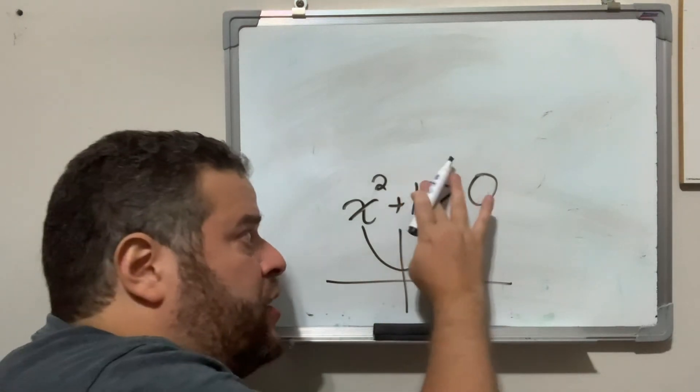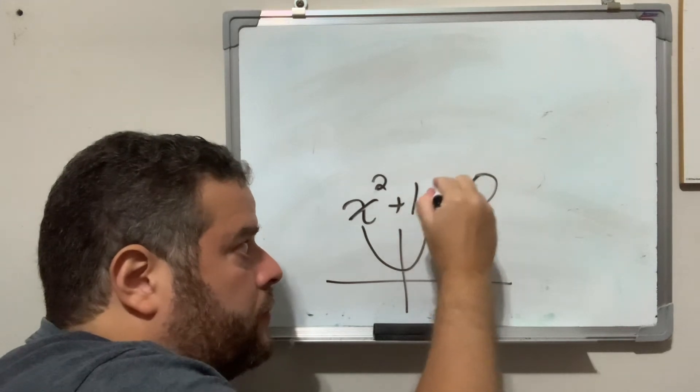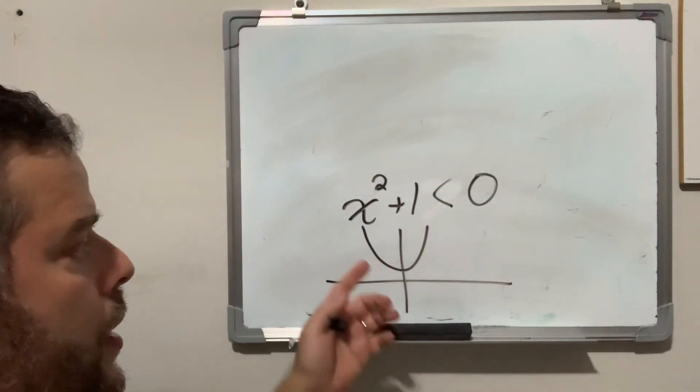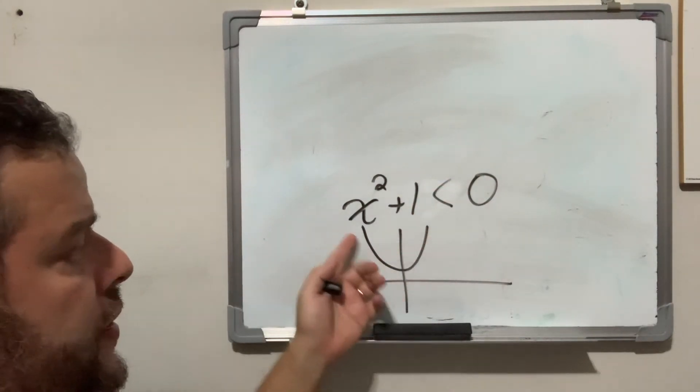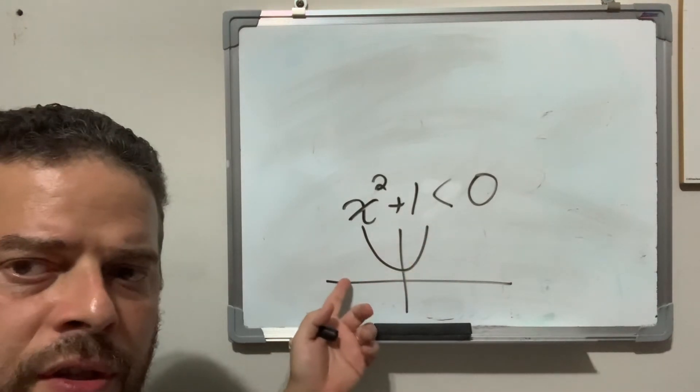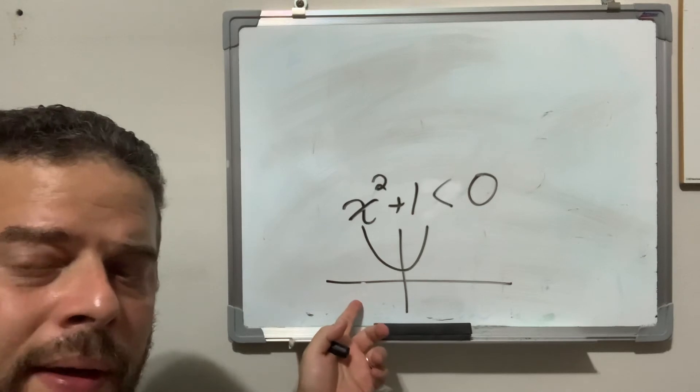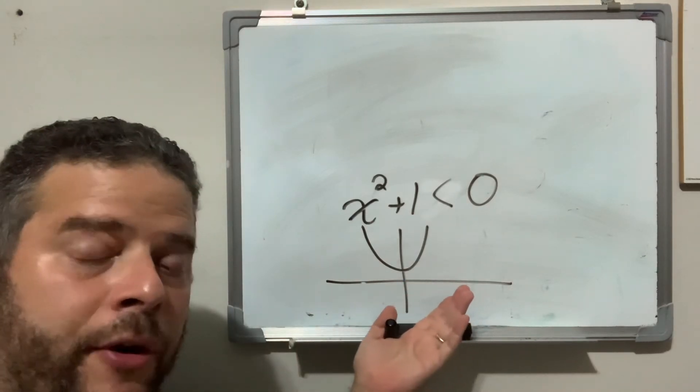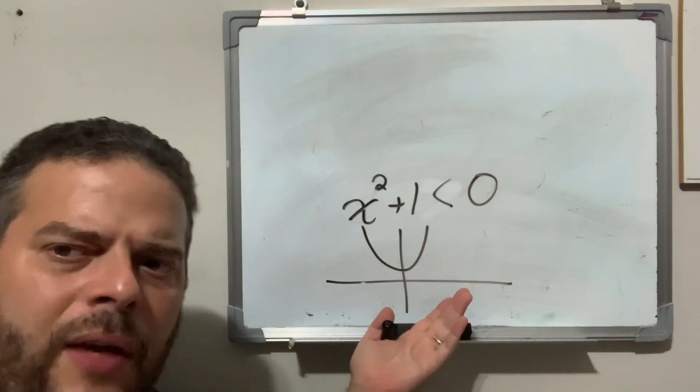If we were to change it, less than zero, no particular value here will ever be less than zero. It doesn't touch the x-axis, doesn't go below it. So, in this case, there is no solution. And we've seen this before.